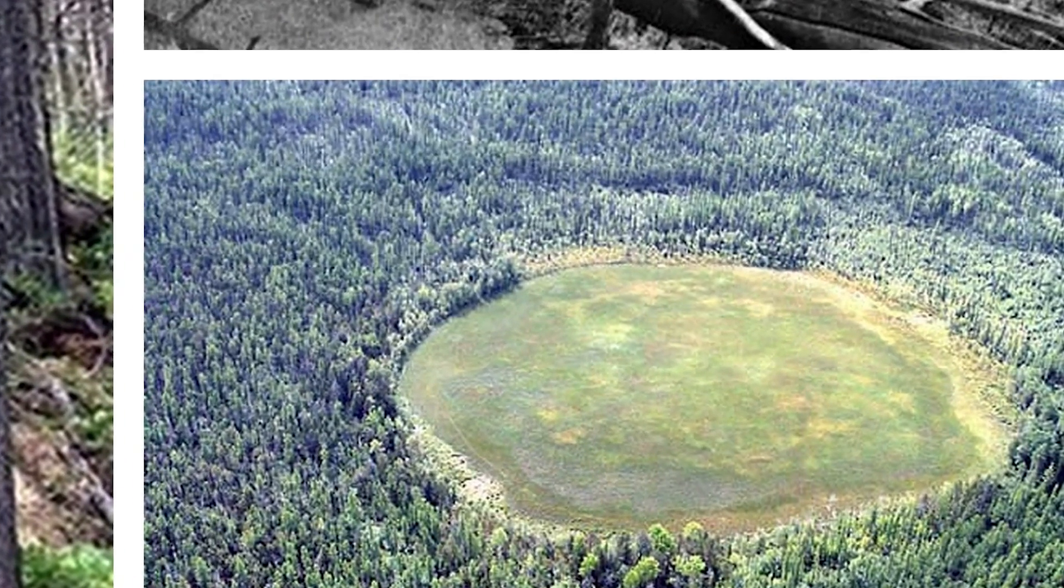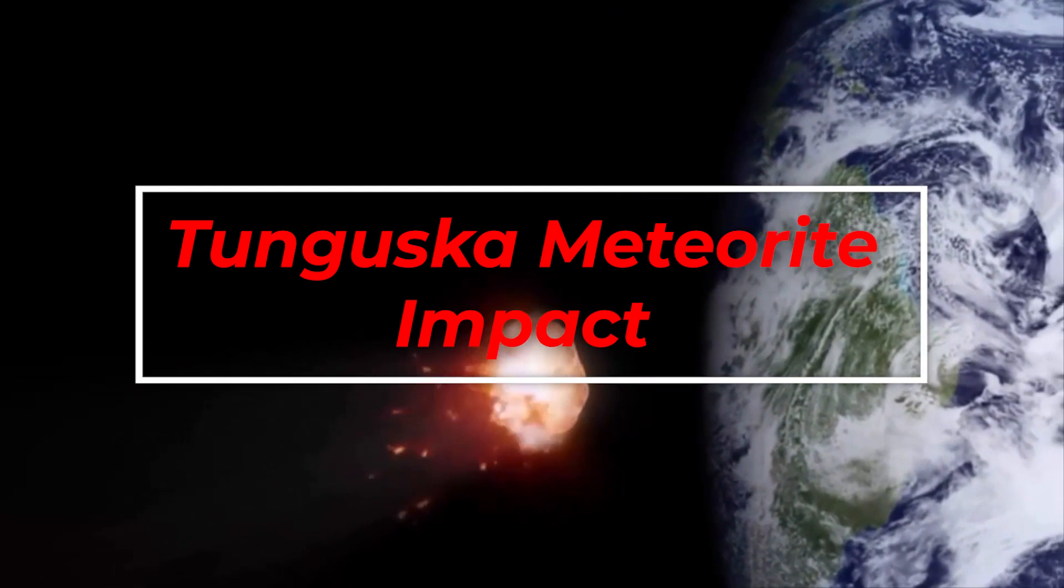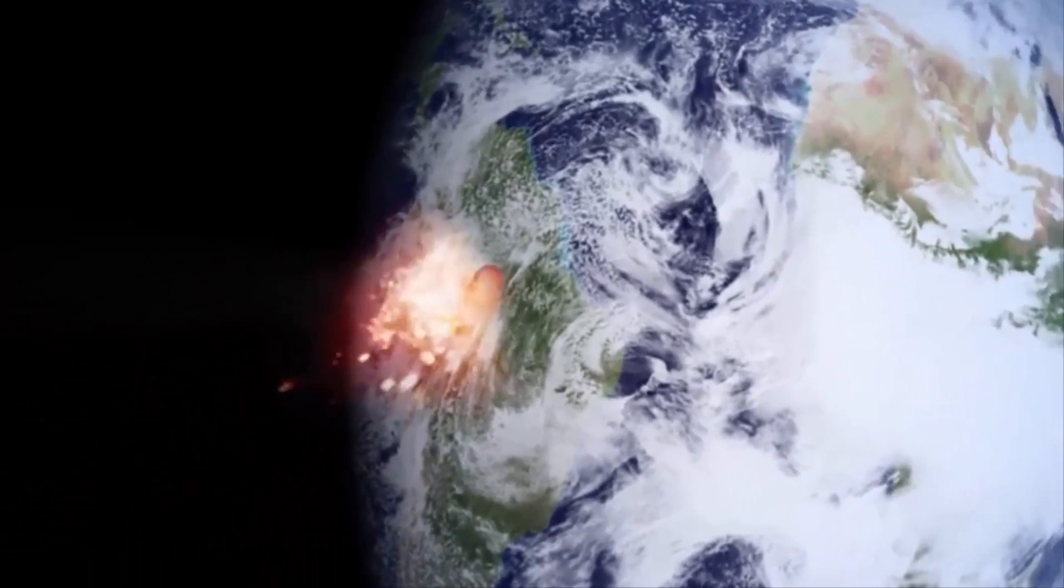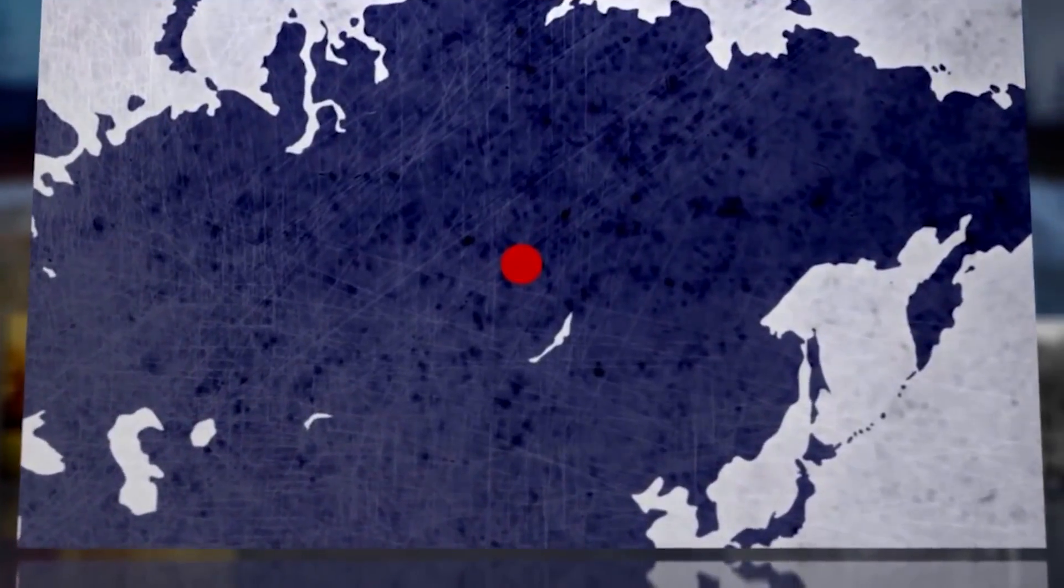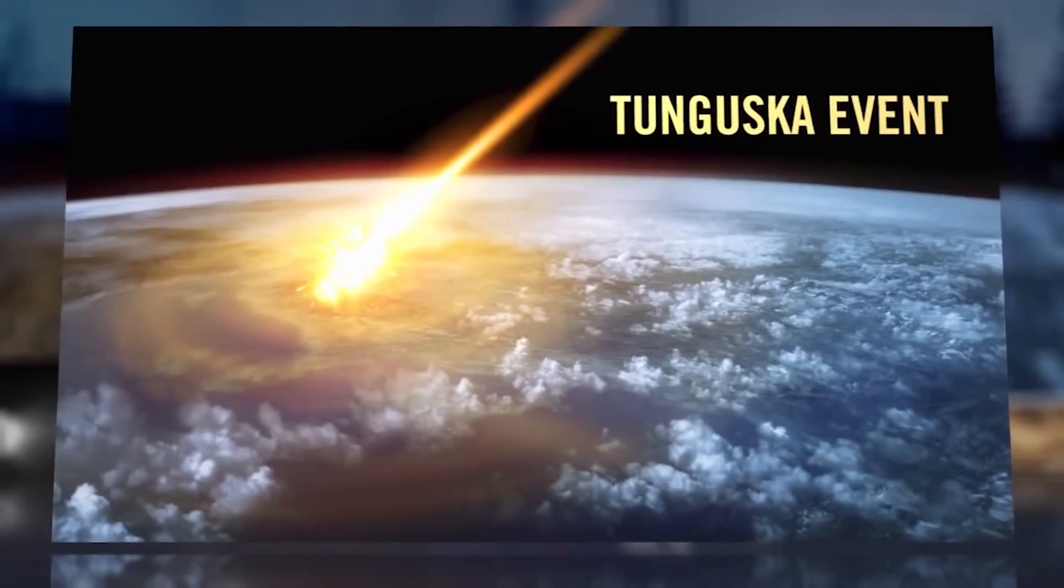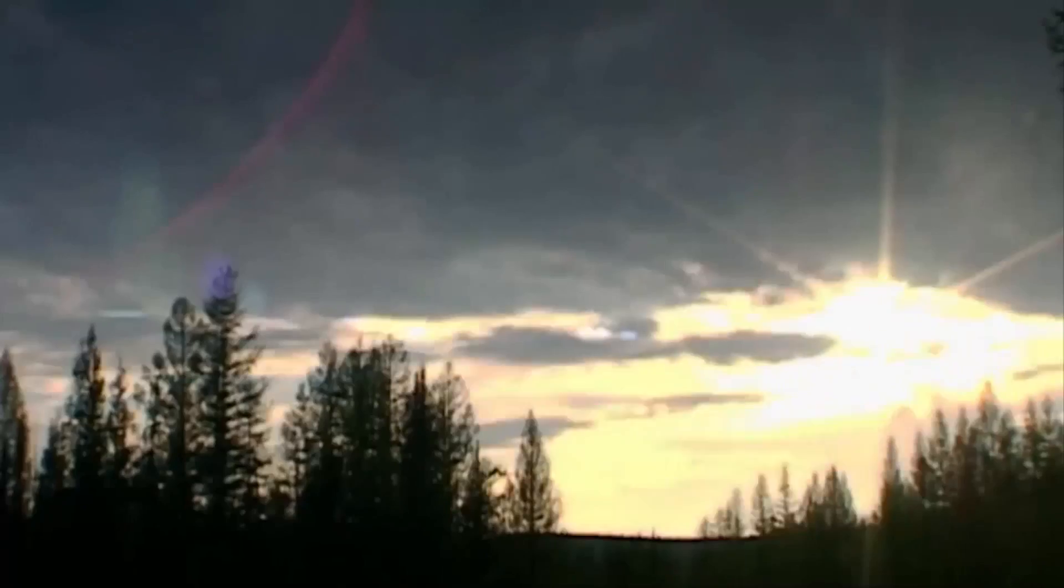The Tunguska Meteorite Impact is the most powerful of all near-Earth objects since the beginning of the 20th century. It happened in 1908 close to Russia's Podkamennaya Tunguska River, a sparsely inhabited area in Siberia, as it exploded at about 5 to 10 kilometers above the Earth's surface. This singular 50 to 190 meter wide meteor exploded with a force that is 1,000 times greater than that of the atomic bomb that the US dropped on Hiroshima.